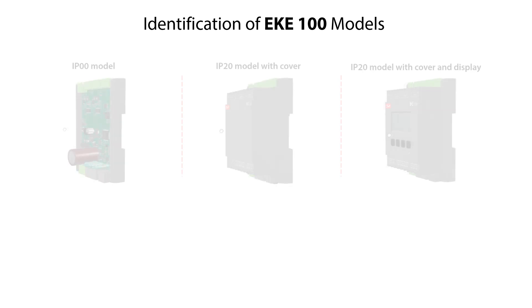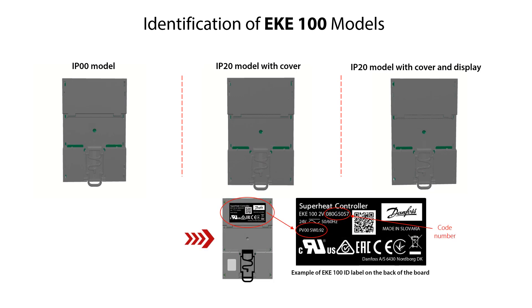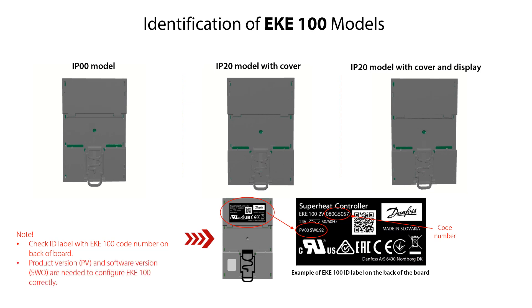The last way to identify the EKE100 models is to check the ID label on the back of the board. Here you see the back of the EKE100 board, which is the same for all three IP rating models. The ID label is located in the same place and includes the same information for all EKE100 models. You can identify the specific EKE100 model by the code number. The ID label also includes the product version called PV and software version called SWO. Please note that you need the product and software versions to configure the EKE100 correctly.